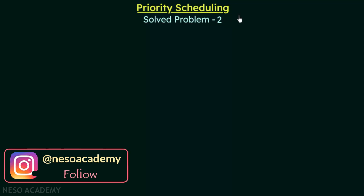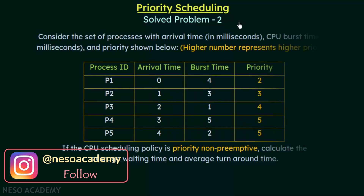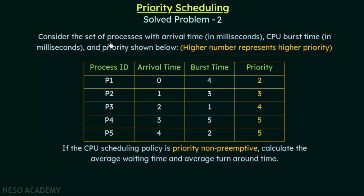In this lecture, we will be discussing another solved problem on priority scheduling. Consider the set of processes with arrival times given in milliseconds, CPU burst time given in milliseconds, and priority as shown below. Here, higher numbers represent higher priority. If the CPU scheduling policy is priority non-preemptive, calculate the average waiting time and average turnaround time.